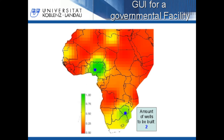On this sheet you can see a graphical user interface for a governmental facility to determine where to build wells. On the lower right you can choose how many wells you want to build. Then the best locations will be displayed, visualized by blue points.